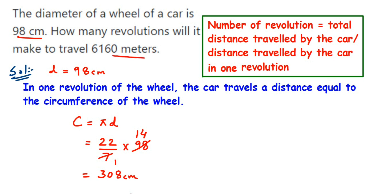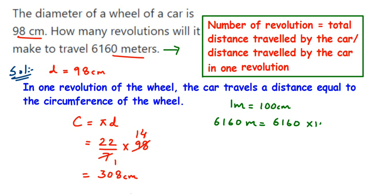We got the circumference as 308 centimeters, but the total distance is given in meters. We need to convert to the same unit. Since converting centimeters to meters gives a decimal and makes calculation complicated, we convert 6160 meters into centimeters. Multiplying by 100, we get 616,000 centimeters.